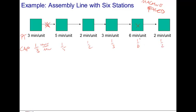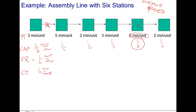Applying our definition of bottleneck — the step with the lowest capacity — station five is indeed the bottleneck. Assuming there is enough demand, the flow rate will be one unit every six minutes, which corresponds to ten units per hour. We can then define the cycle time of the process as six minutes between units, which is intuitive because that is exactly the activity time at the bottleneck.